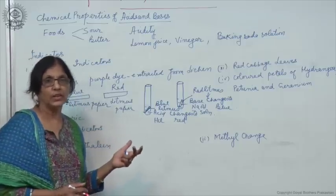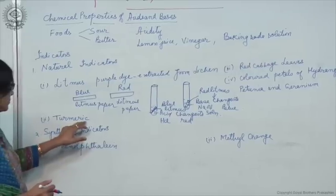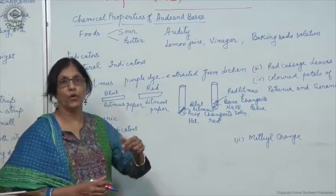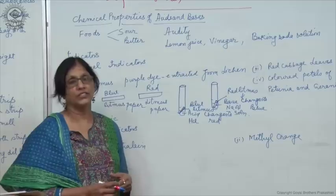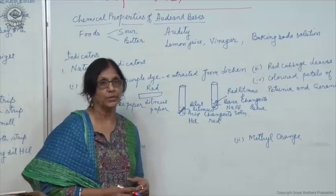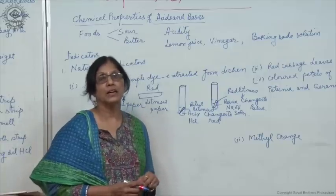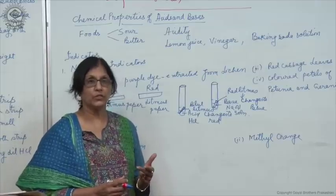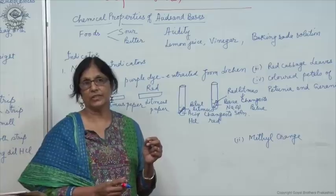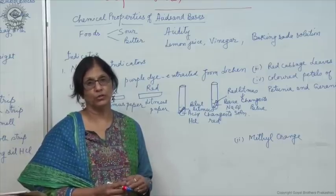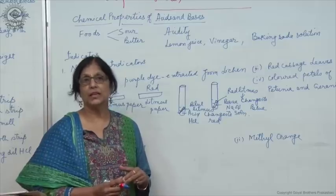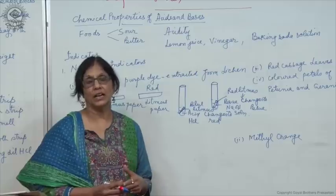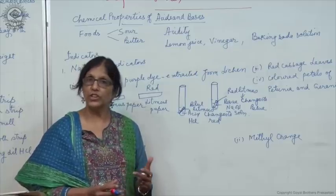There are many other natural indicators, like turmeric. Turmeric powder is used for cooking, and you may have observed that if it falls on clothes, it leaves a yellow-coloured stain. On washing the clothes with soap solution — which is basic — the stain changes to pink colour. So turmeric is also a natural indicator: it turns pink in the presence of a base, and shows no change in colour with acids.